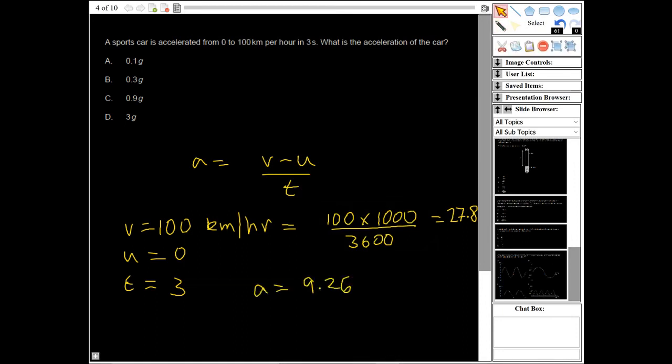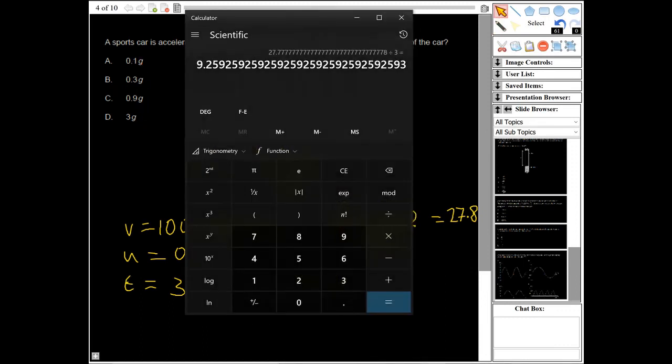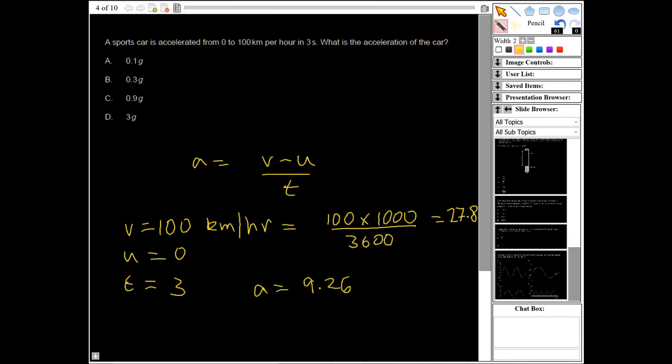Now if we look at our potential answers here we can see they're all in terms of g. So if I then divide that by g, which is 9.81, I can see I basically get 0.9. So the answer should be 0.9g, which is C.